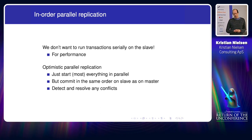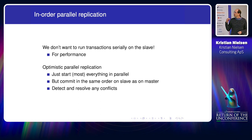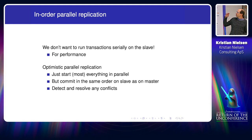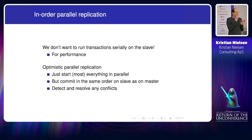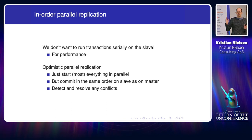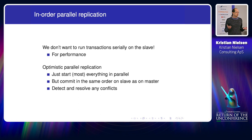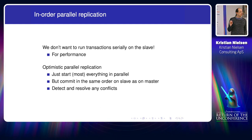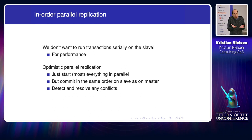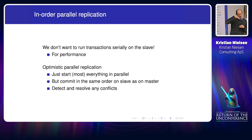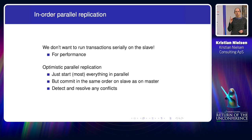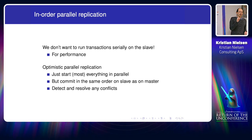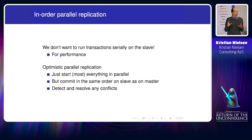Let's start with one consequence of this: parallel replication, especially what we call in-order parallel replication, which was implemented some years ago. We don't want to apply transactions one after the other for performance — it's too slow. Modern hardware needs parallelism. The idea in in-order parallel replication, also called optimistic parallel replication, is that we just try to run everything in parallel, but when they commit, we make sure they commit in the same order as they appear in the bin log — which is the order from the master. Sometimes that results in conflicts, but we detect and resolve them quickly.